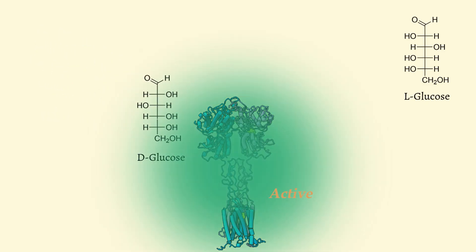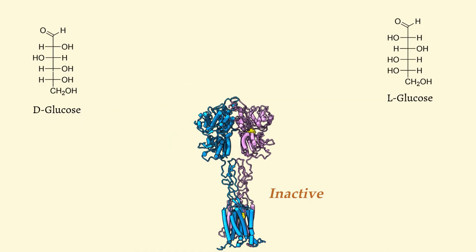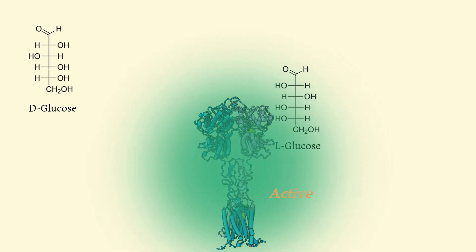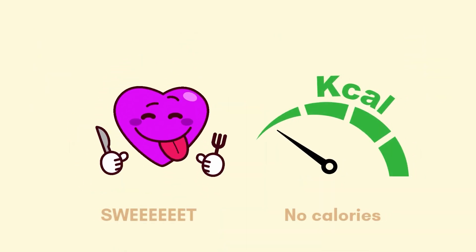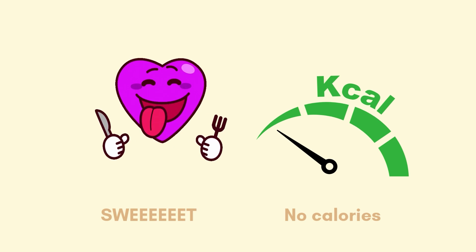Despite this, L-Sugars produce a sweet taste due to the fact that both L and D glucose can bind to and activate the TAS-1R2 and TAS-1R3 sweet taste receptor. Together, these traits allow L-Sugars to deliver sweetness without calories.